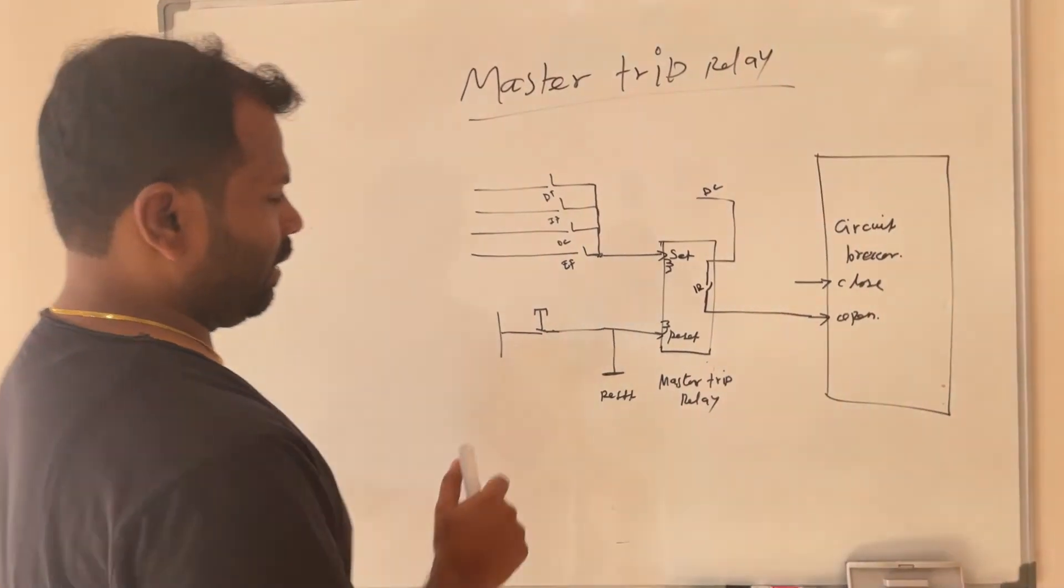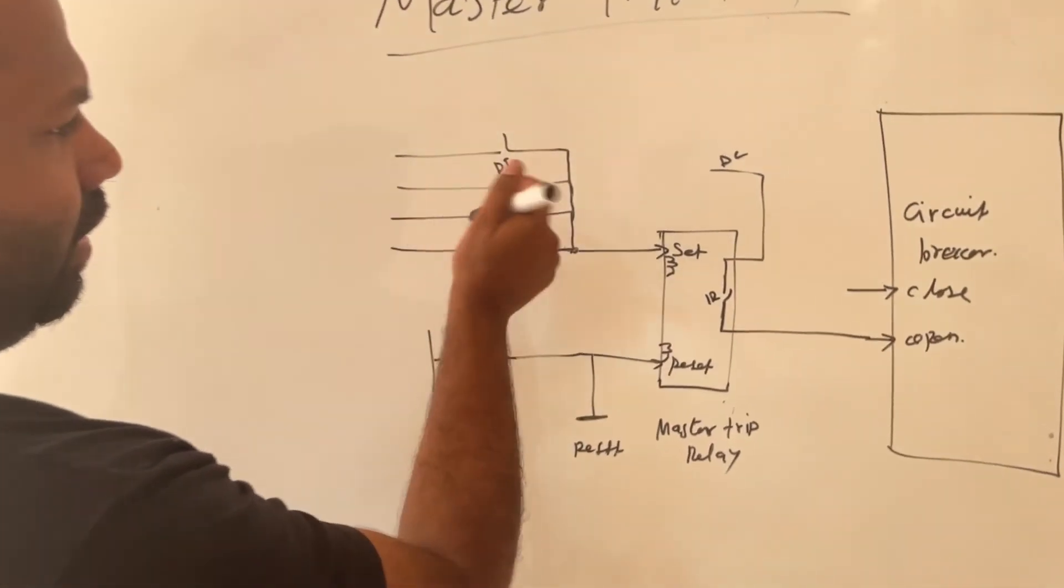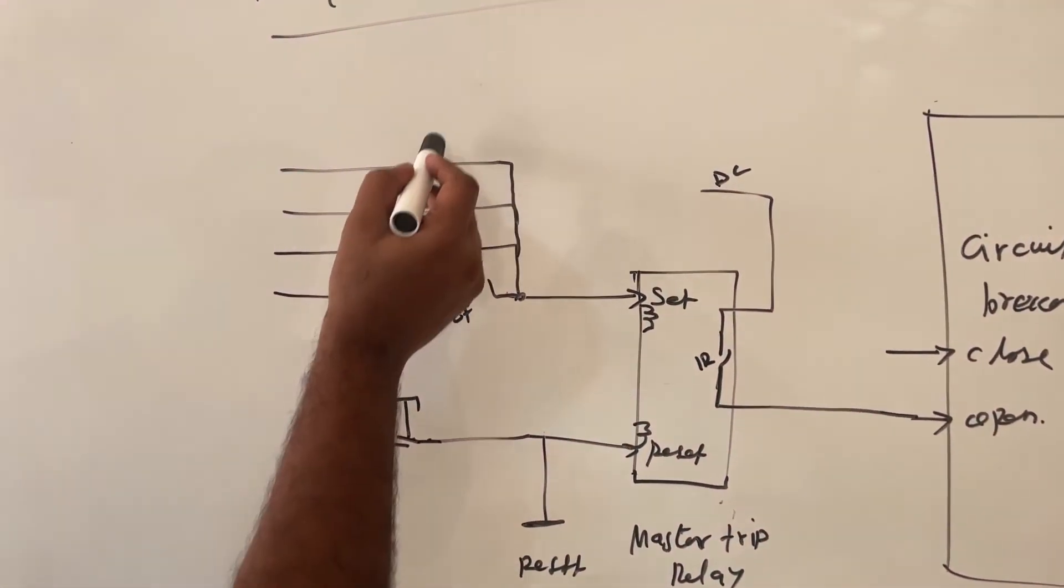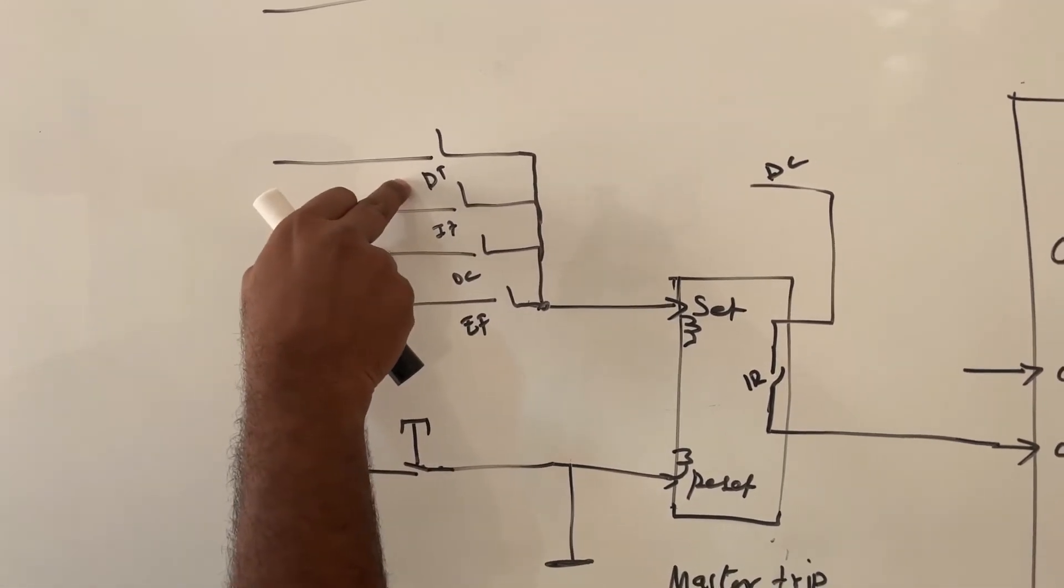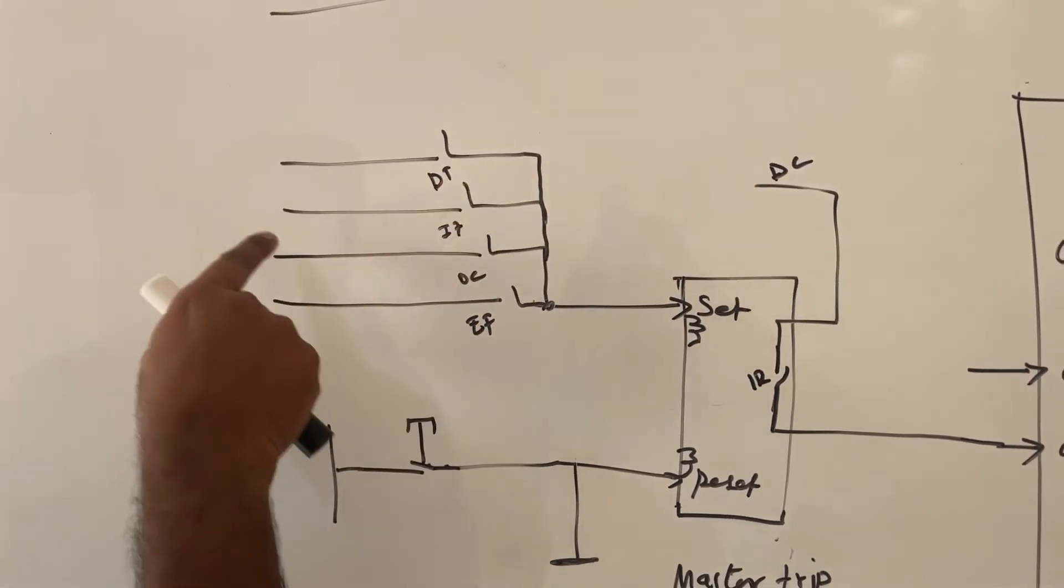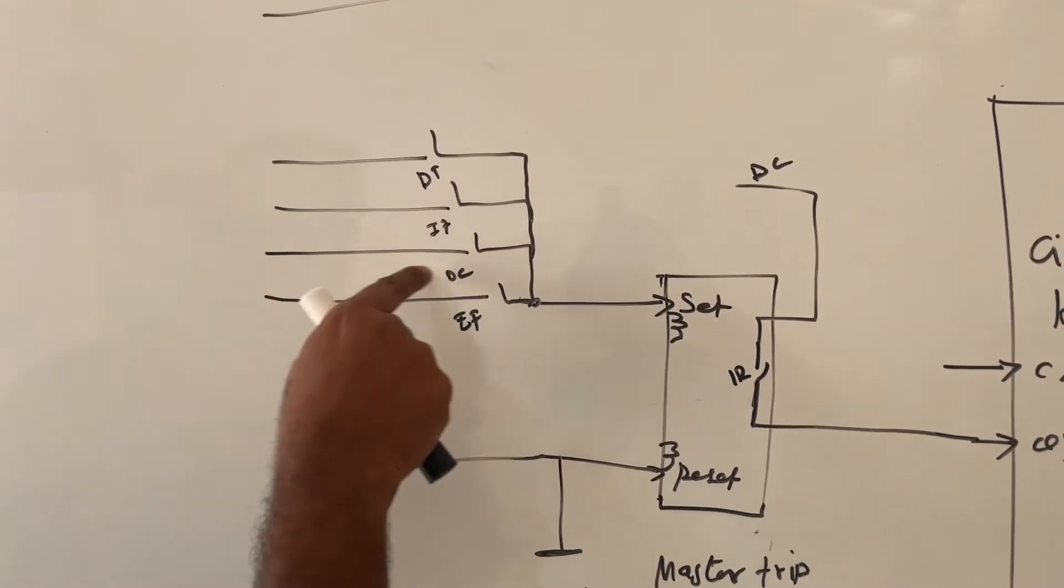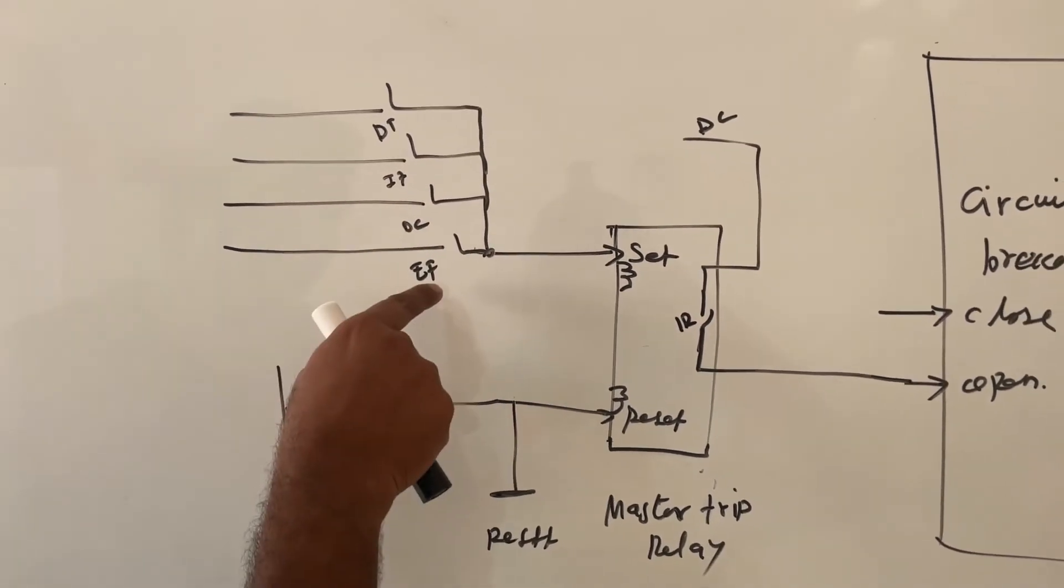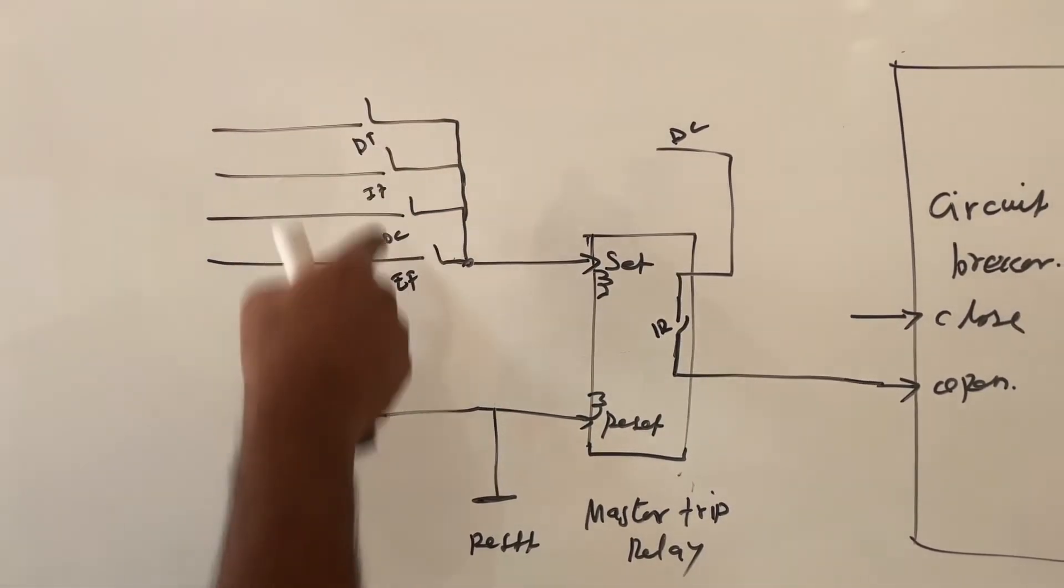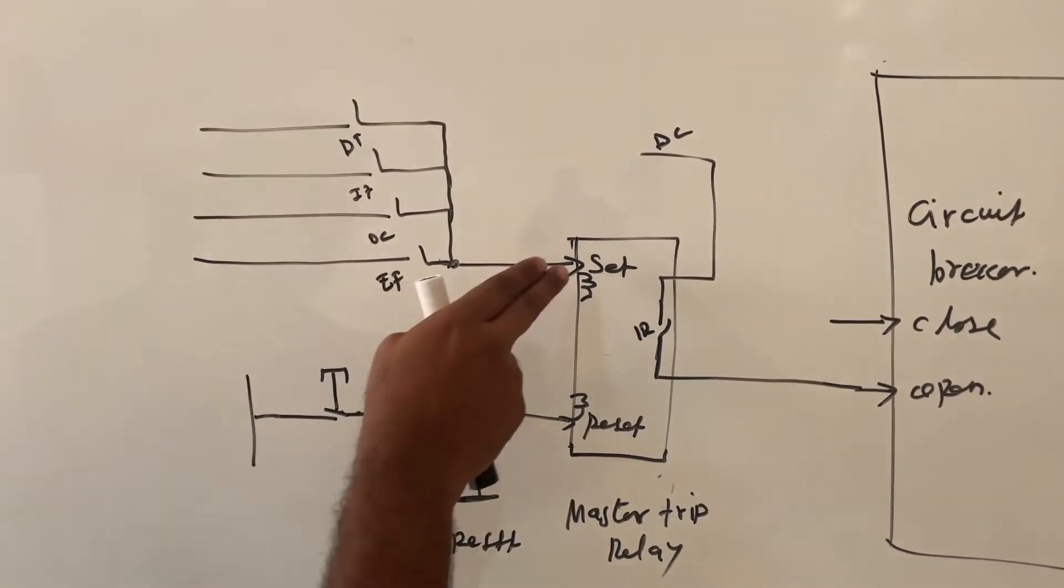To this set coil or trip coil, external relay contacts will be connected parallelly. This signal coming from differential protection relay, this signal is coming from instantaneous trip relay, this trip signal is coming from over current relay, this signal is coming from earth fault relay. Like this you can add any trip command parallelly to this master trip relay set coil.